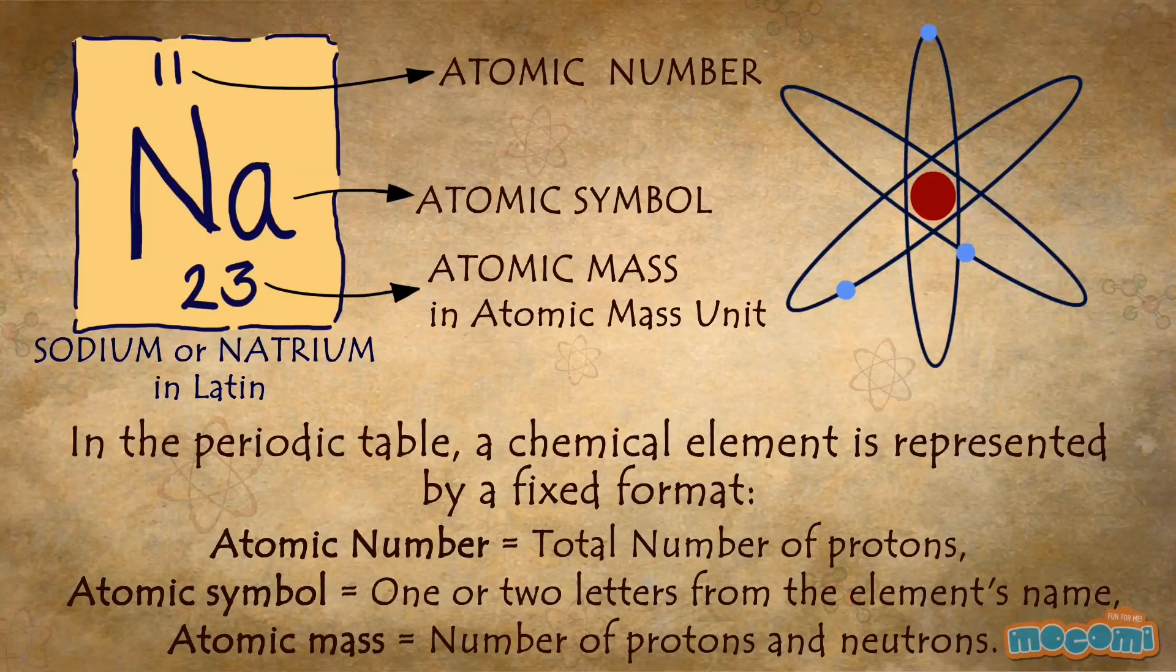In the periodic table a chemical element is represented by a fixed format: the atomic number, the atomic symbol and atomic mass.